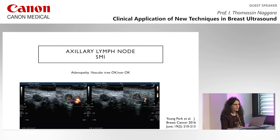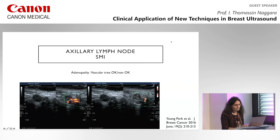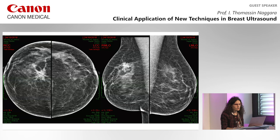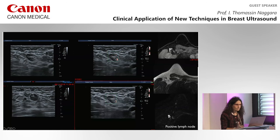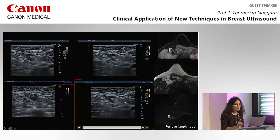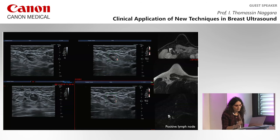SMI can also be useful for characterizing axillary lymph nodes. In a normal lymph node, you see a completely homogeneous vascular tree — better visible on SMI than on Doppler. In one example with a right breast cancer, an adenopathy was found with vessels absent in one part of the lymph node. Focusing the biopsy on that avascular region revealed nodal metastasis. SMI can therefore help target the correct part of the lymph node during fine needle aspiration or biopsy.